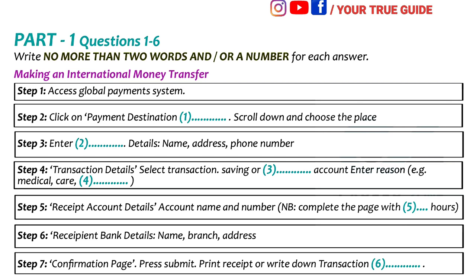Zimbabwe. I've got it, right at the bottom. Good. Then Step 3 is to fill in your personal details — name, address and contact phone number.